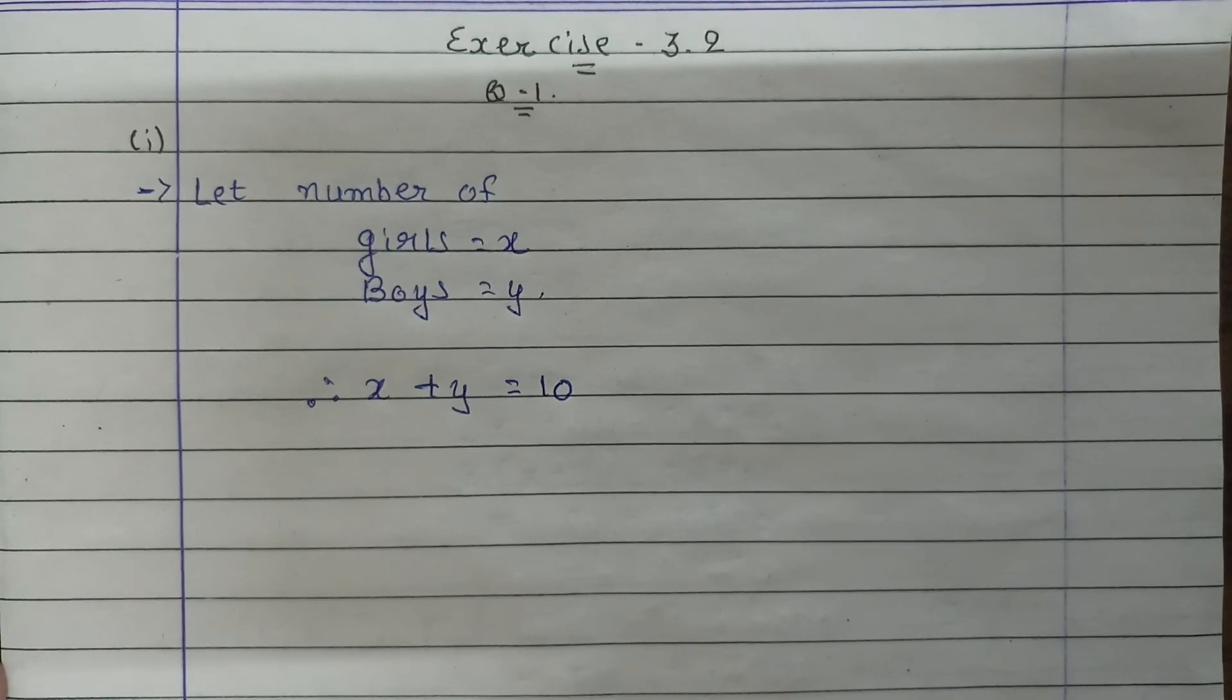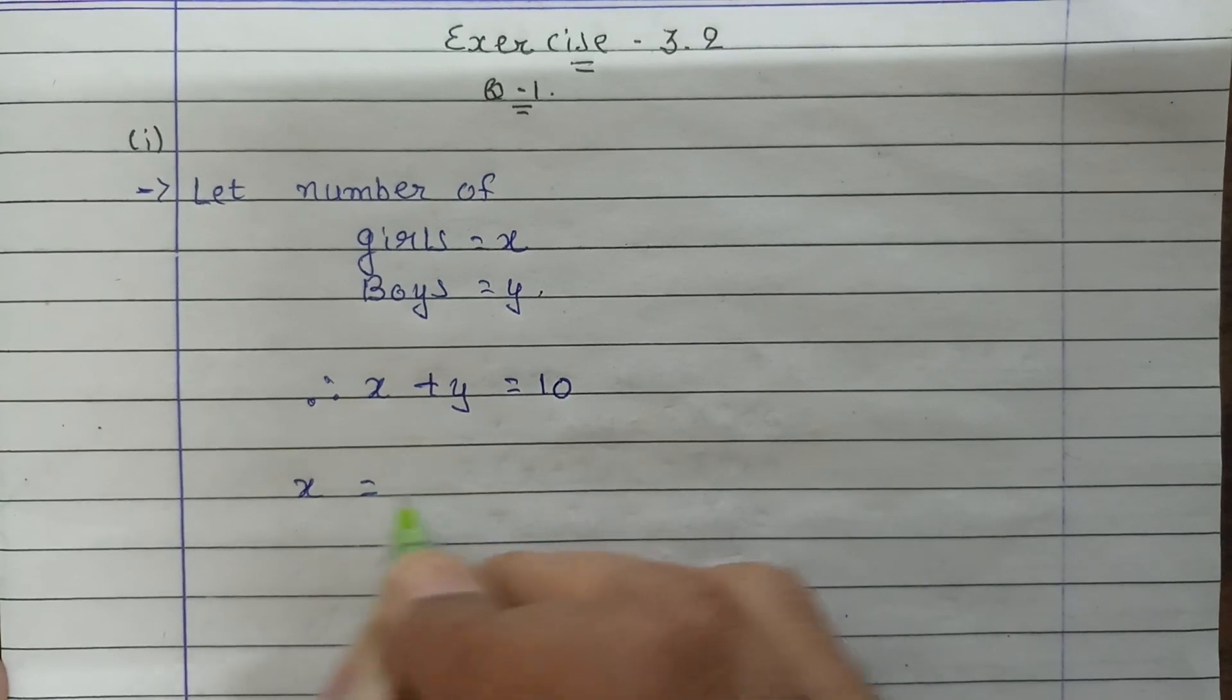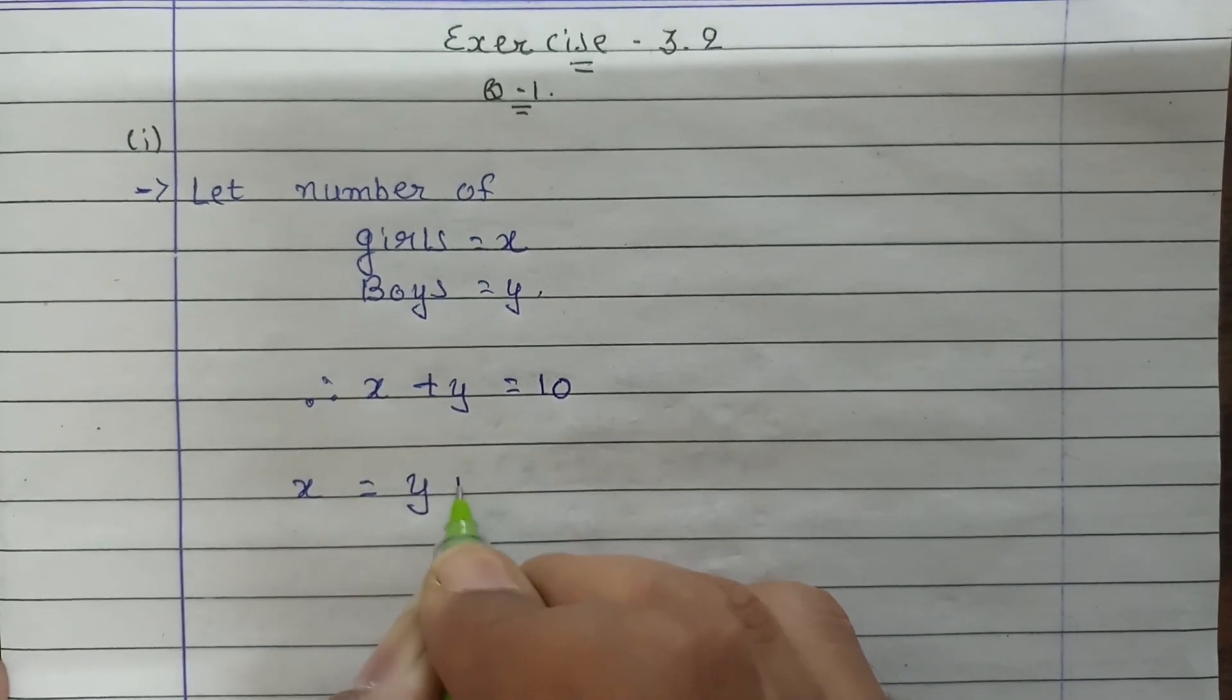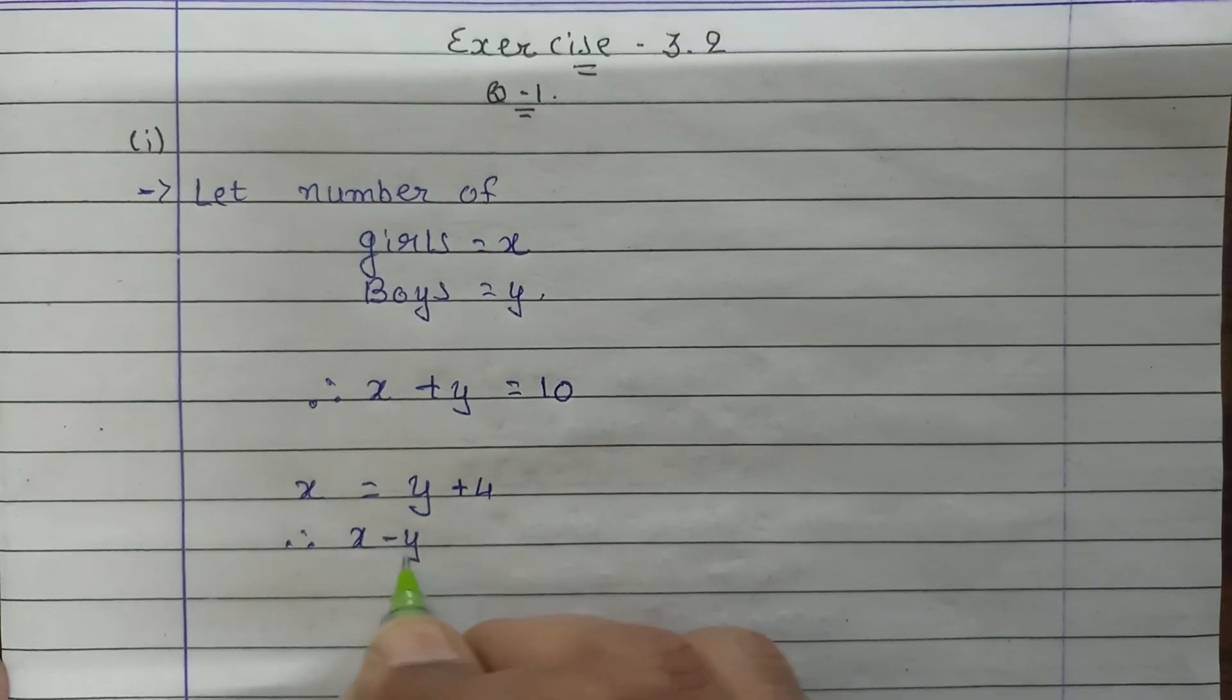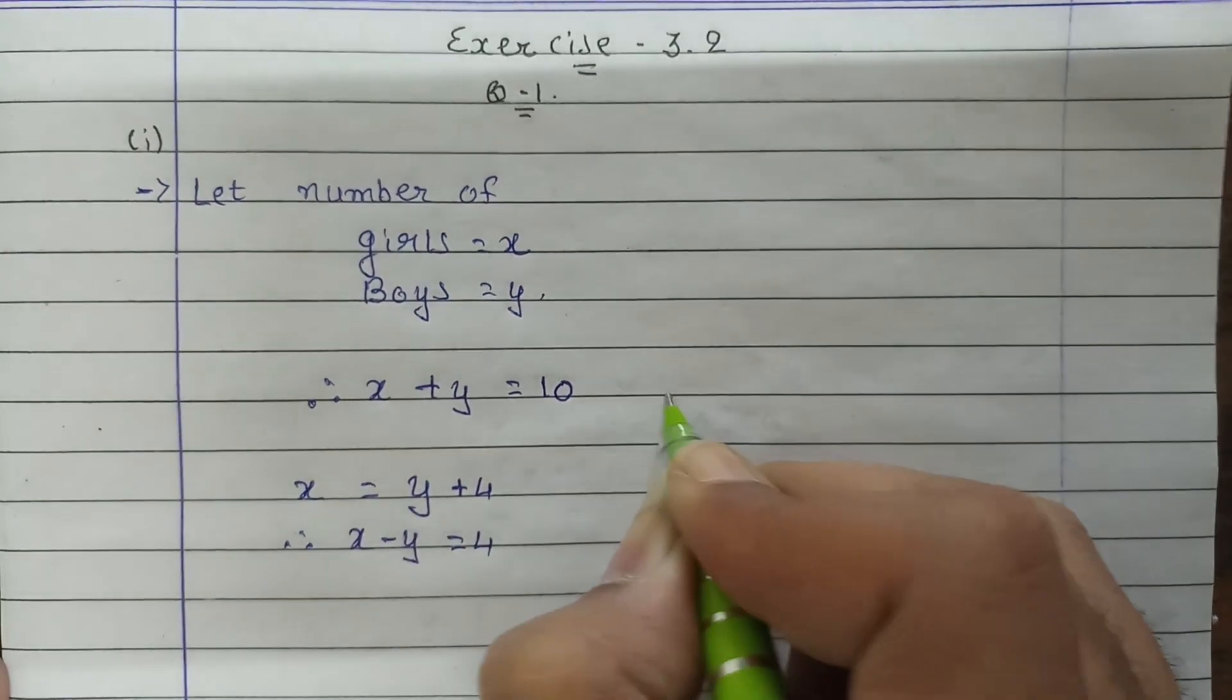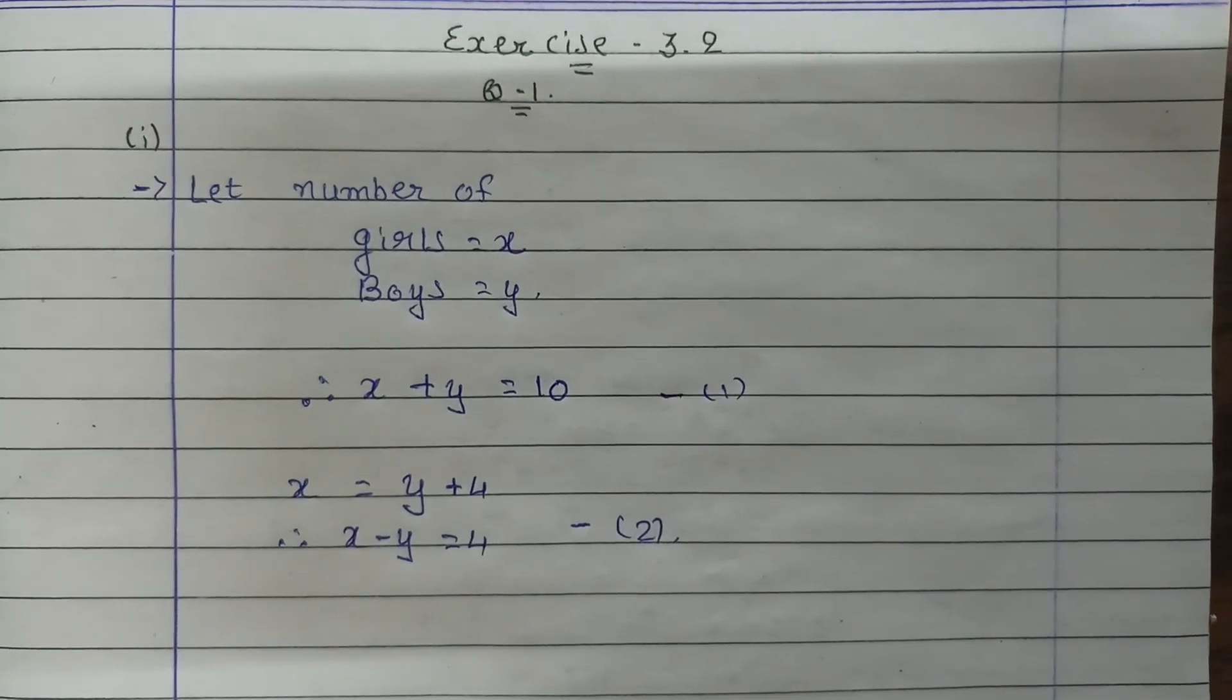According to the second condition, the number of girls is 4 more than the number of boys. So number of girls equals number of boys plus 4, which means x minus y is equal to 4. This is the first equation and this is the second equation.